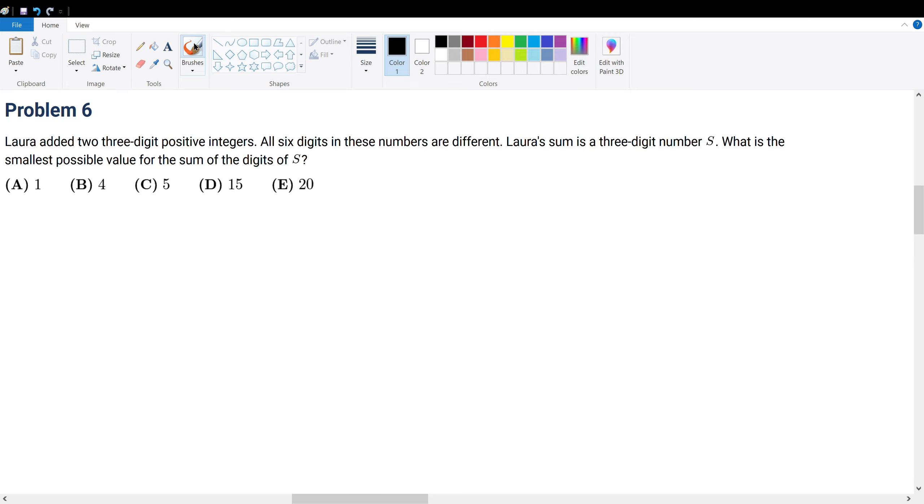Problem six. Laura added two three-digit positive integers together. All six digits in these numbers are different. Laura's sum is a three-digit number s. What is the smallest possible value for the sum of digits of s?